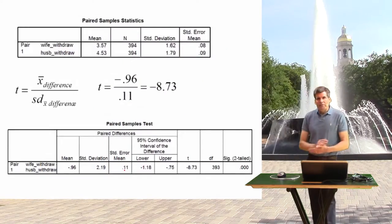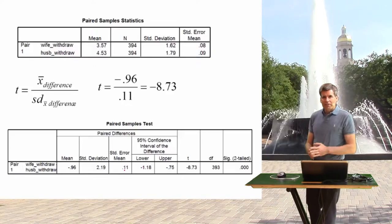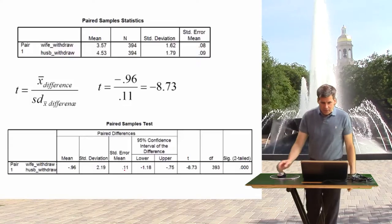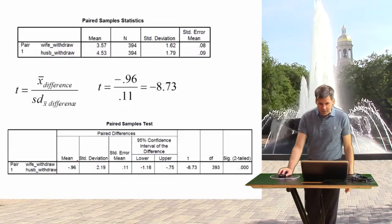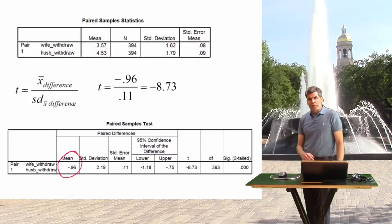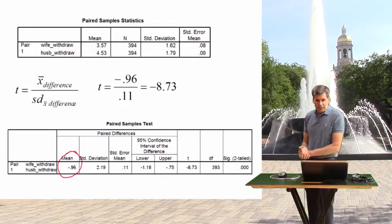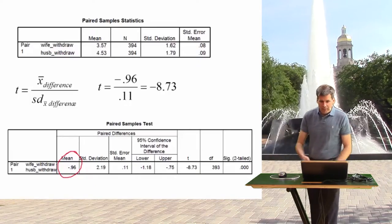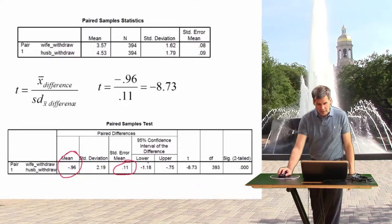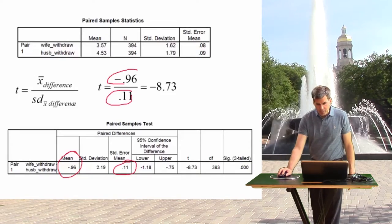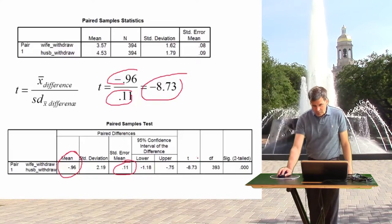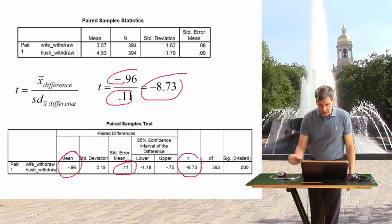You may also be asked to calculate a t-test. A t-test is always the statistic divided by its standard error. Our statistic is the mean difference: negative 0.96. Divided by the standard error of the difference score, 0.11, we get negative 8.73 — which is indeed what appears in the output for our t-value.